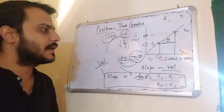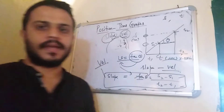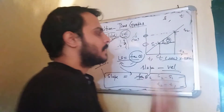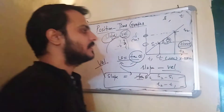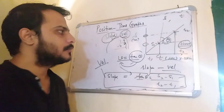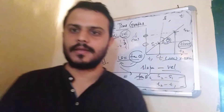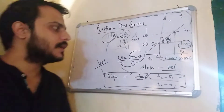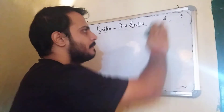So we have two ways to find velocity from the S-T graph: we calculate the slope, or we look at the angle theta and compute tan(theta) to get velocity. The slope of the S-T graph gives us the velocity of the body.